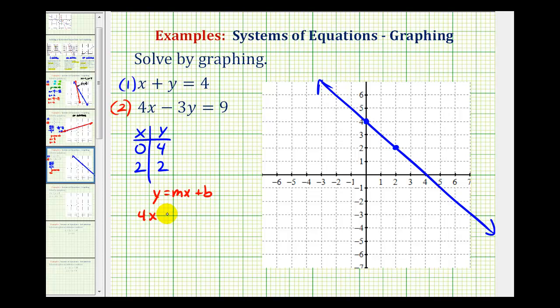We'll take this equation and solve for y. If we have 4x minus 3y equals 9, to solve for y, we'll first subtract 4x on both sides. So we'd have negative 3y equals negative 4x plus 9.